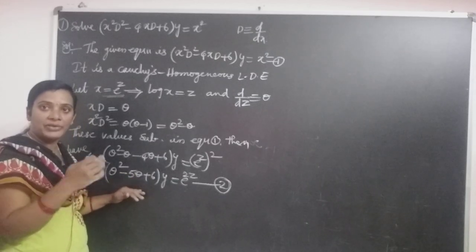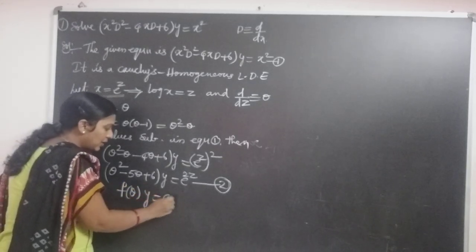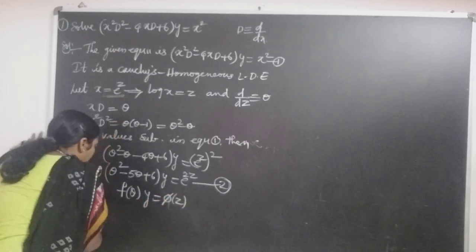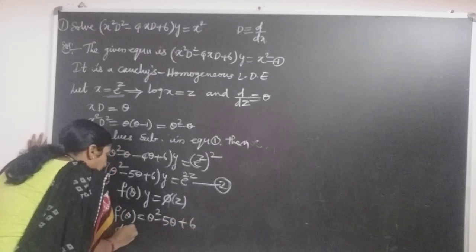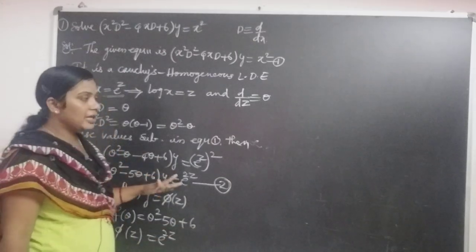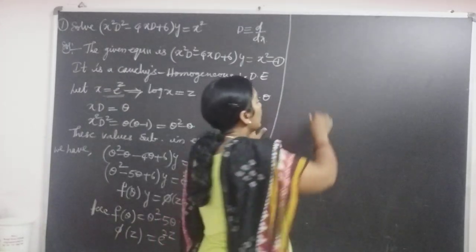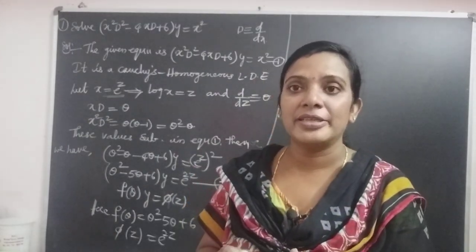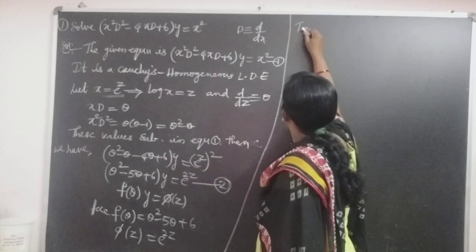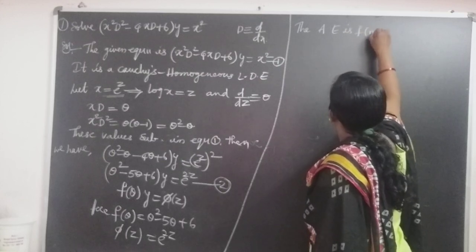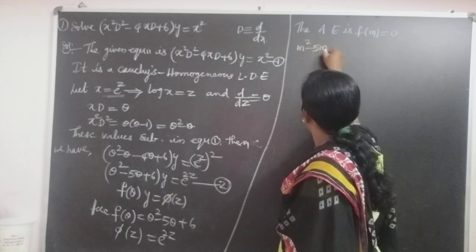Equation 2 can be solved by the method of higher-order linear differential equations. Comparing with f of theta into y equal to pi of z, here f of theta equals theta squared minus 5 theta plus 6, and pi of z equals e power 2z. The complementary function is found using the auxiliary equation f of m equal to 0, where theta is replaced by m, giving m squared minus 5m plus 6 equal to 0.